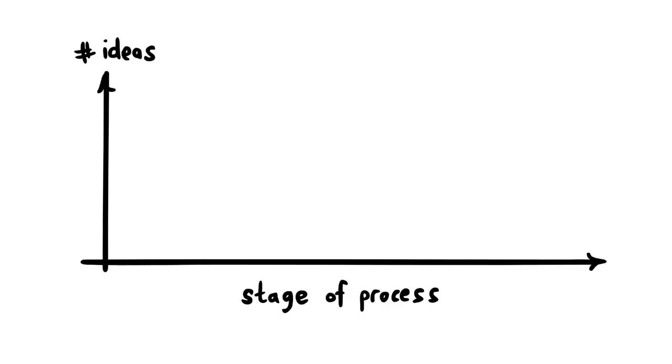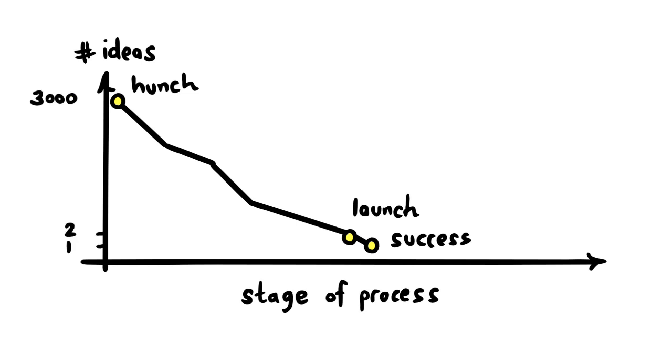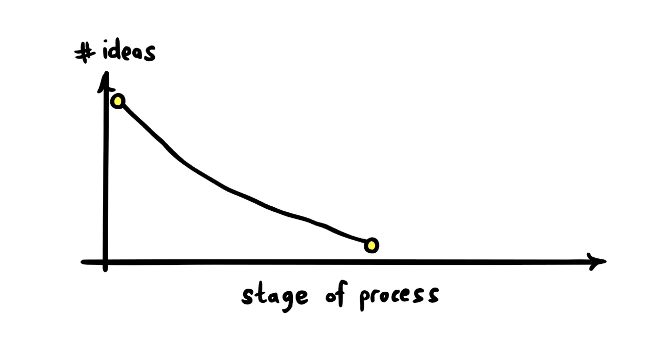In terms of the goal, I start with the work of Stevens and Burley, who plotted the success rates of ideas against stage of the innovation process and came up with something like this. They're most well known for showing that it takes something like 3,000 hunches, raw ideas, to yield one success. And that comes from roughly two launches.